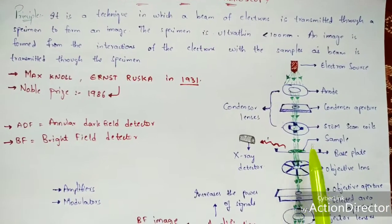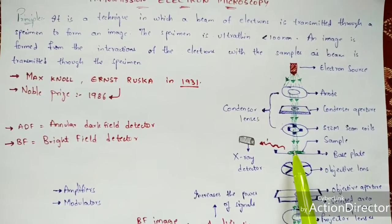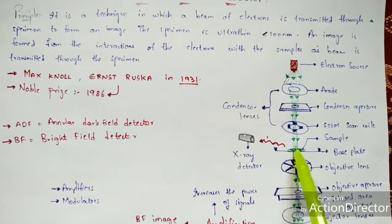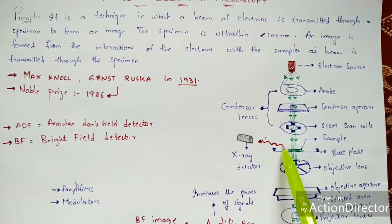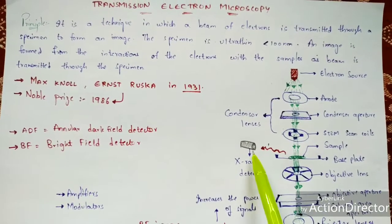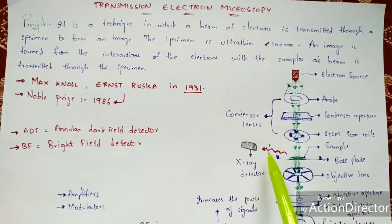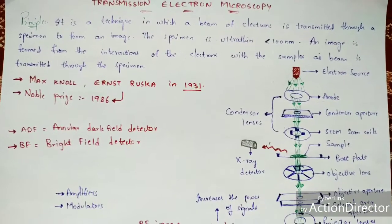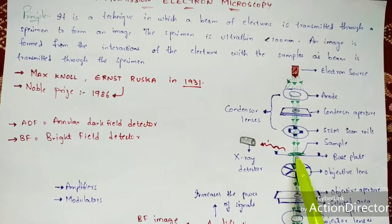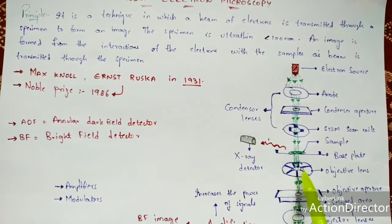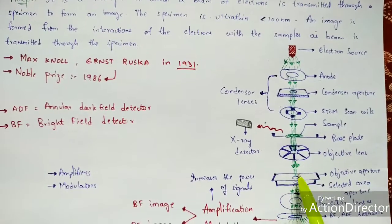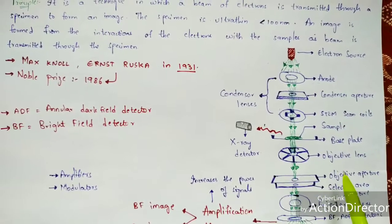The base plate consists of the specimen, which is the sample we place. The X-ray detector detects the image from this sample. The beam then passes up to the objective lens, and from the objective lens it passes to the objective aperture.